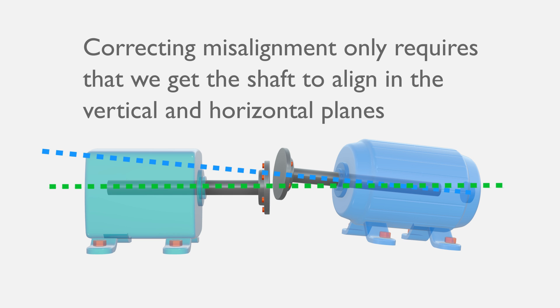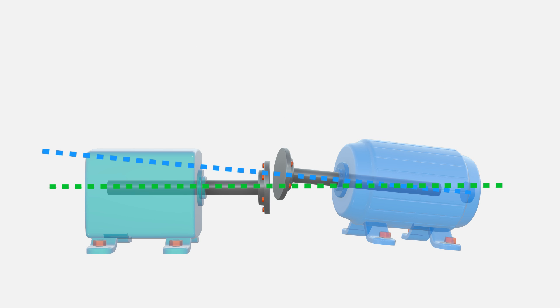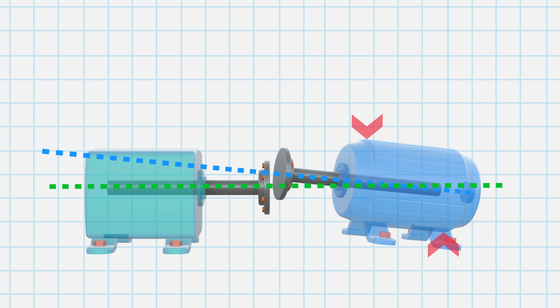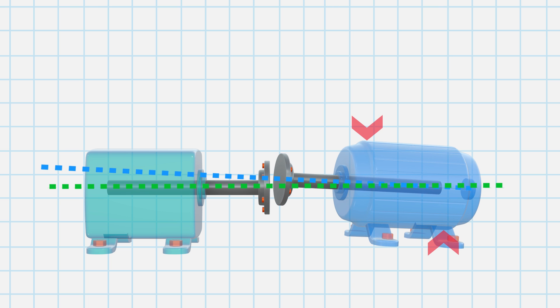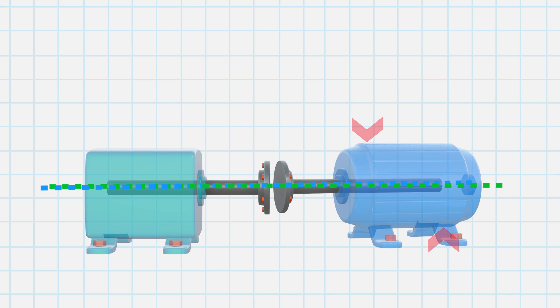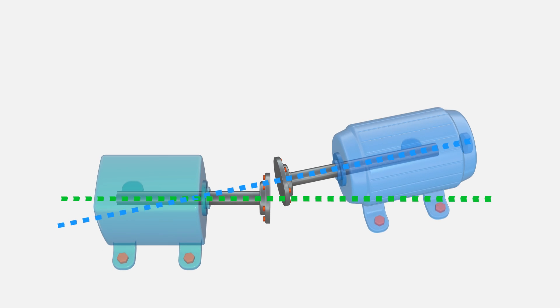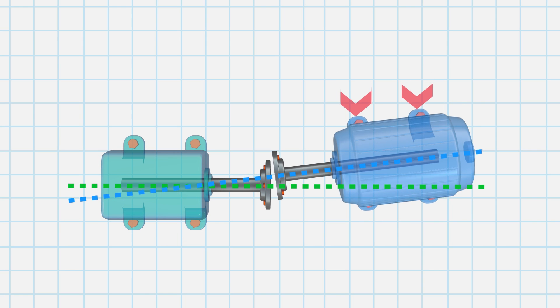Fortunately, we are able to adjust the relative position of the two shafts in these two dimensions. We can raise and lower the movable machine in the vertical plane and we can move it side to side in the horizontal plane.